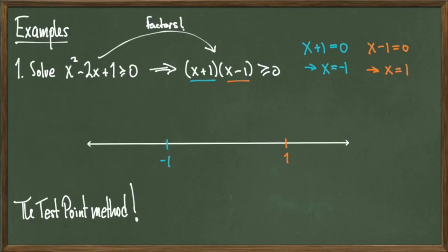Our roots are our benchmarks. To pick test points, we need a number to the left of -1, one between -1 and +1, and one to the right of +1 — making sure the numbers we pick aren't our roots. I can pick any numbers I want, so I'll use -2, 0, and 2. I'm picking these because they exist around and between my roots.